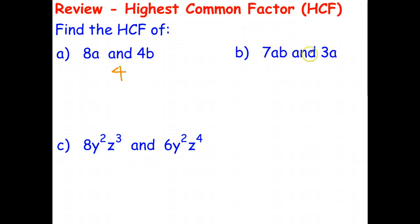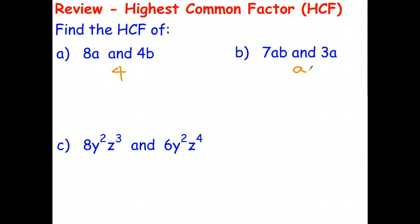For the second question: 7 and 3 don't have any common factors except 1, which we don't normally write. But there is a common factor of a — there's an a in 7ab and a factor of a in 3a. There's only a factor of b in 7ab, not in 3a. So the highest common factor is the variable a.